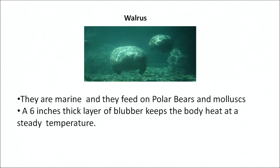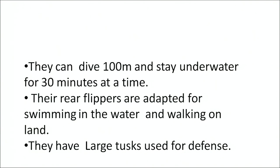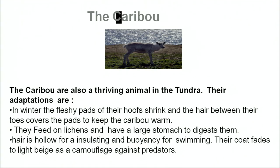Walrus is another example of polar animals. They are marine and feed on molluscs. A 6-inch thick layer of blubber keeps the body of walrus warm and heat-stable. They can dive up to 100 meters and stay underwater for 30 minutes at a time. Their rear flippers are adapted for swimming in water and walking on land, and they have tusks which are used for defence. The caribou is another interesting animal of the tundra biome. The fleshy pads of their hooves shrink and the hair between their toes covers the pads to keep the caribou warm. They feed on lichens and have a large stomach to digest them. Their hair is hollow for insulating and giving buoyancy for swimming. Their coat fades to a light colour to camouflage against predators.